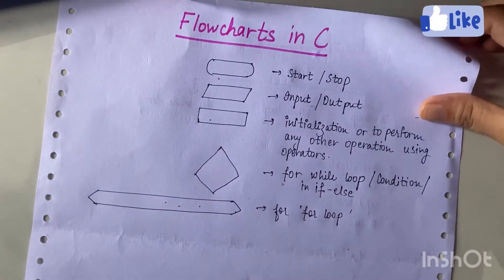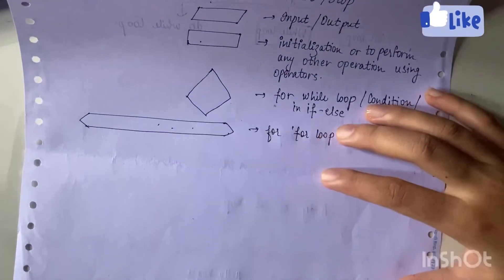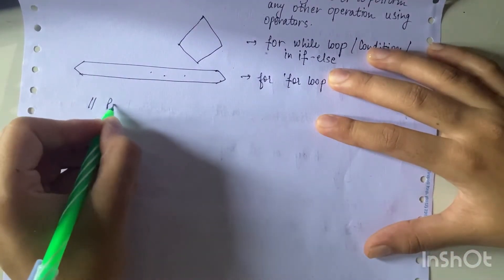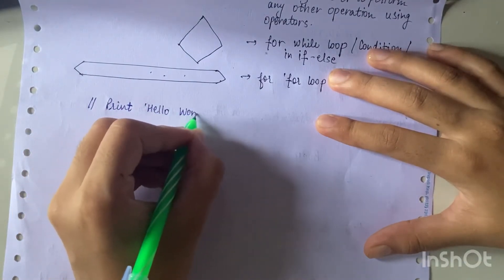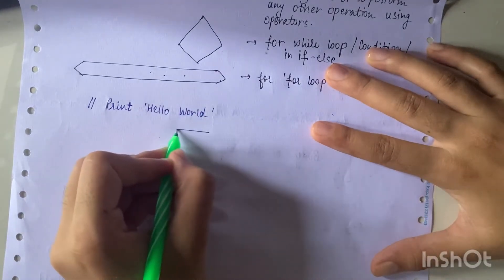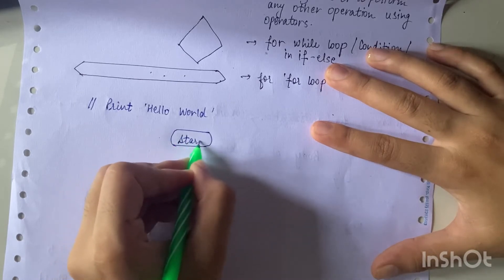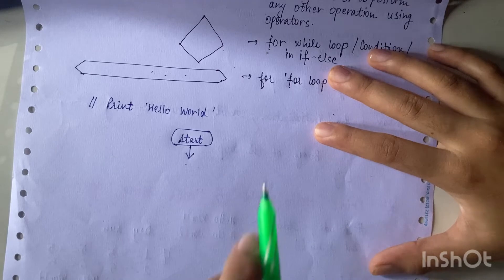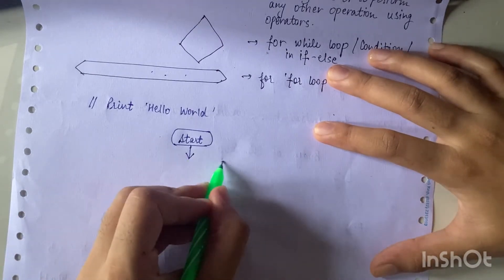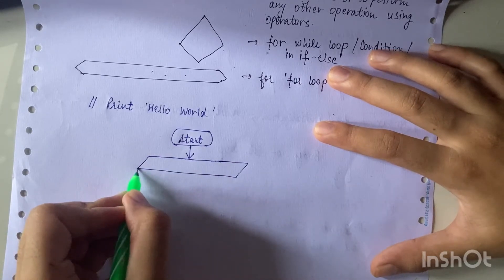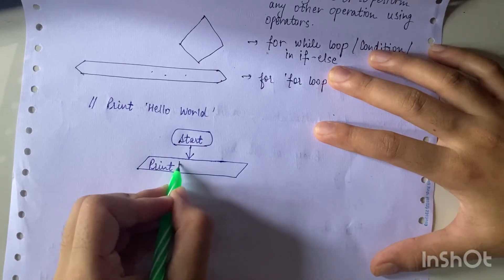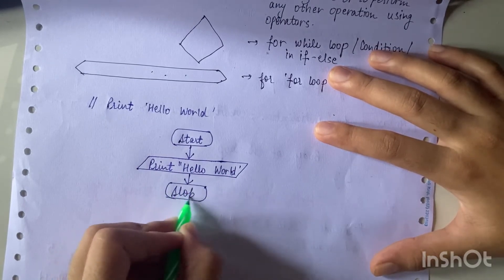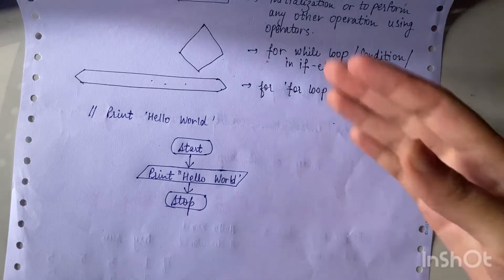Now let's draw our first flowchart where we will print Hello World. We start with the oval start block. Then, since we only need to print Hello World once, we use the parallelogram block for output and write 'Hello World' inside it. Then we end with the stop block. This was a very simple first flowchart.